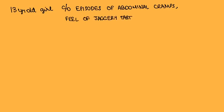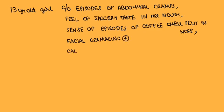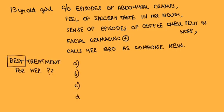Let's try guessing the answer for these questions: 13-year-old girl complains of episodes of abdominal cramps, feel of jaggery taste in her mouth, sense of episodes of coffee smell felt in nose, facial grimacing meaning abnormal movements, calls her bro as someone new. Best treatment for her is: antipsychotics only, give PPI omeprazole and ultrasound abdomen, antiepileptics, temporal lobectomy. What is the best treatment?